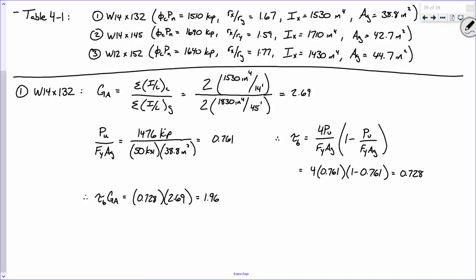Now, what does that mean for tau? What is tau? Tau is four P-U over F-Y-A-G times one minus P-U over F-Y-A-G. Which is just four times this fraction, which is zero point seven six one, times one minus zero point seven six one. What do we got? Point seven two eight. So, therefore, we'll adjust our bottom value, or our G value with tau, so zero point seven two eight times two point six nine. And what does that yield? One point nine six.